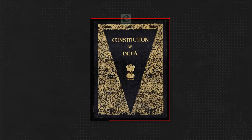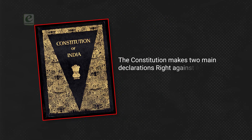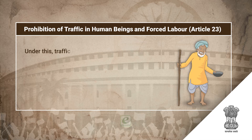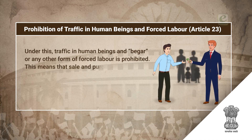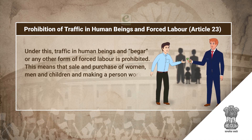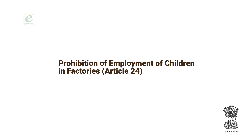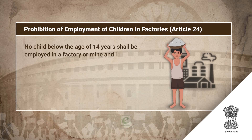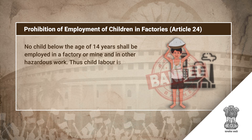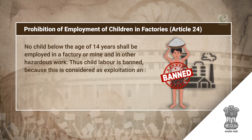Right Against Exploitation, Articles 23 and 24. The Constitution makes two main declarations under this right. Article 23 prohibits traffic in human beings and beggar or any other form of forced labour — meaning sale and purchase of women, men and children, and making a person work against his will without payment is banned. Article 24 states that no child below the age of 14 years shall be employed in a factory, mine, or other hazardous work. Thus, child labour is banned as it is considered exploitation and is illegal.